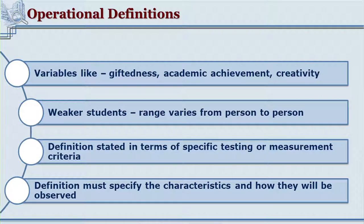Suppose there are variables such as giftedness, academic achievement, or effectiveness used in a research. The meaning of giftedness may be understood by one person in a certain way, while another may define it differently. For example, one person may say a score of 97 to 100 makes one gifted, whereas another may say 95 to 100. Such variations in understanding can lead to deviations in analysis and further research findings.